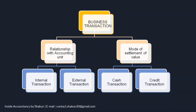External transactions are those between a business entity and a second party. For example, goods sold on credit to a person called Zeeshan — that is an external transaction where the business entity is interacting with a third party. The second classification is based on mode of settlement: cash transactions, where payment is made or received immediately, and credit transactions, where payment is promised to be made later.